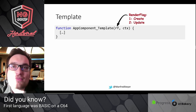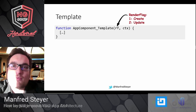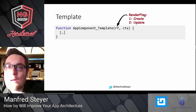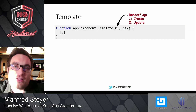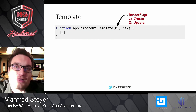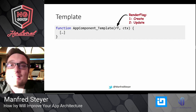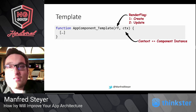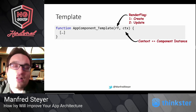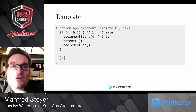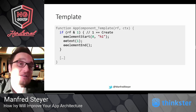The template function has two parameters. The first parameter is the render flag, which can have two values: one and two. One means we are in the creation phase, two means we are in the update phase. In the creation phase, Angular is creating your template — creating all your HTML tags like the h1 tag. In the update phase, it performs data binding and updates all the elements. The context here is nothing else than your component instance.